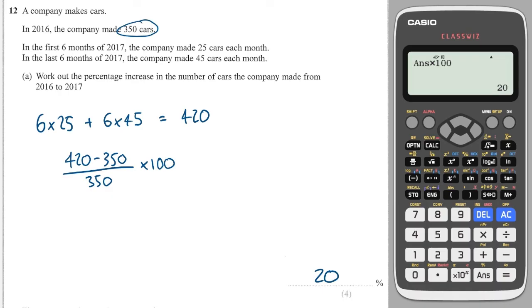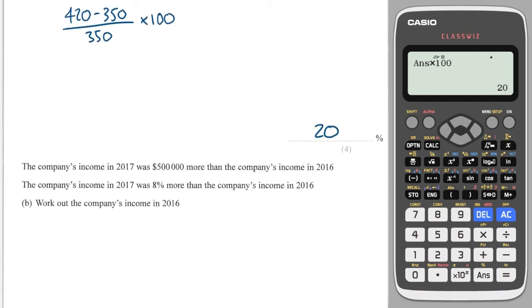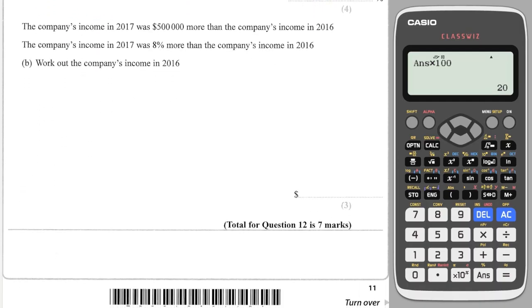And it says the company's income in 2017 was $500,000 more than the company's income in 2016. The company's income was 8% more than the company's income in 2016. Work out the company's income in 2016.